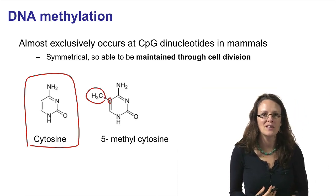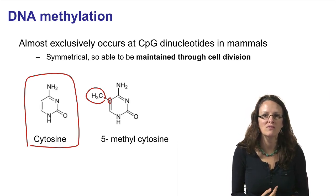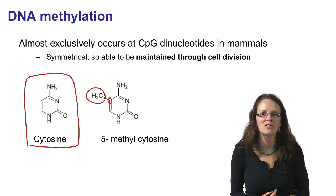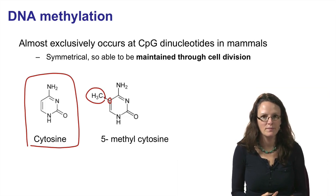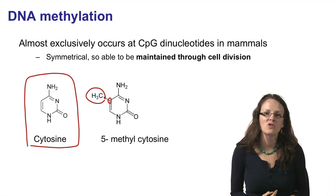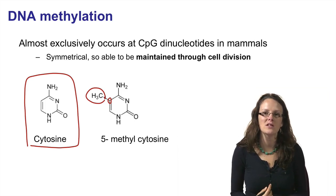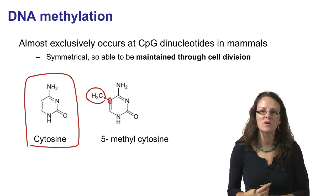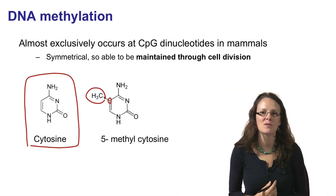In mammals, DNA methylation occurs almost exclusively at cytosines that are followed by guanines. This is called a CpG dinucleotide, where the P is just for the phosphate bond between the two. There is good reason it's found almost exclusively at CpG dinucleotides, because these dinucleotides are symmetrical when you look at the other strand of DNA, and this allows them to be maintained through cell division — one of the hallmark features of epigenetic modifications.